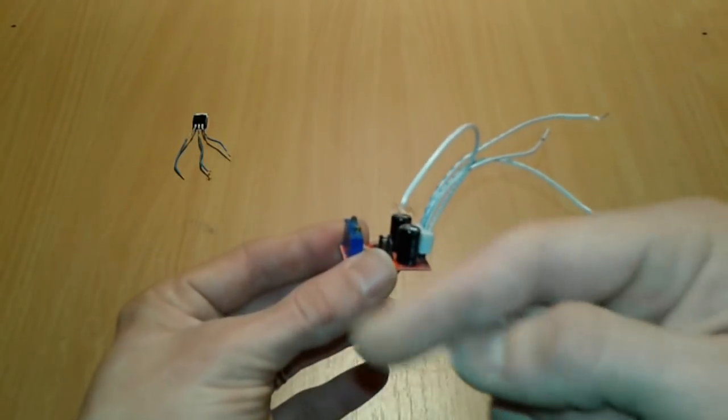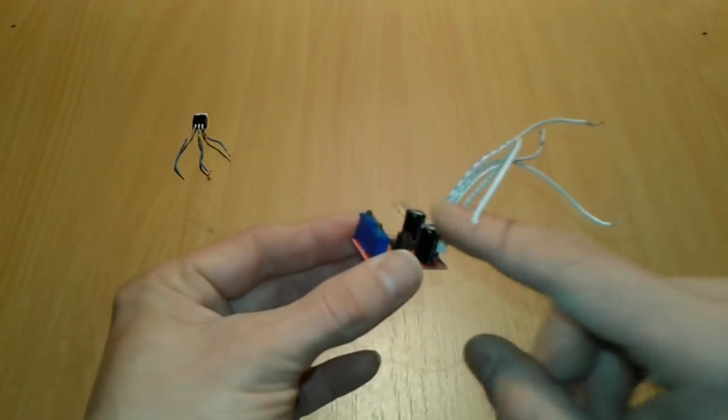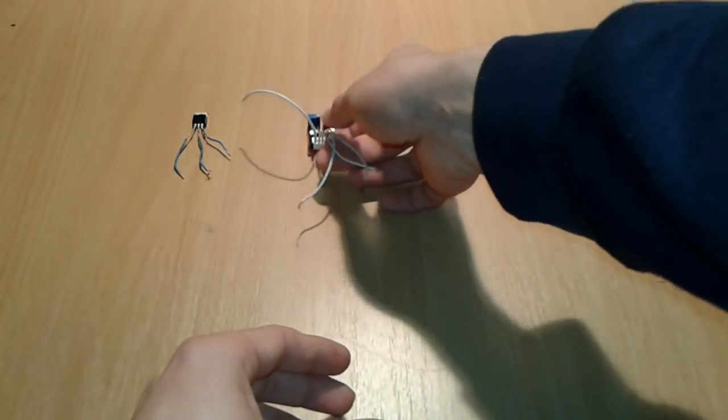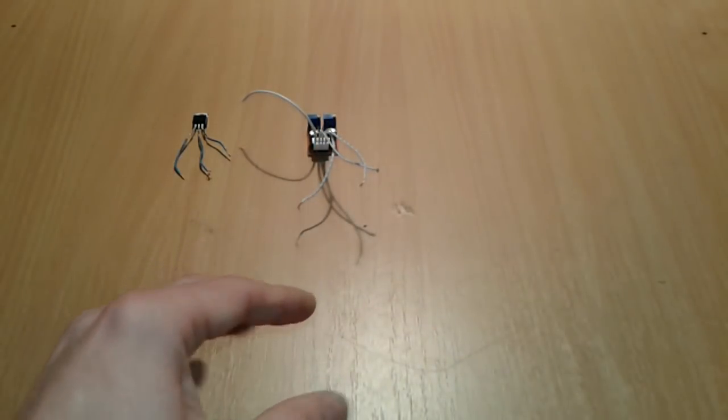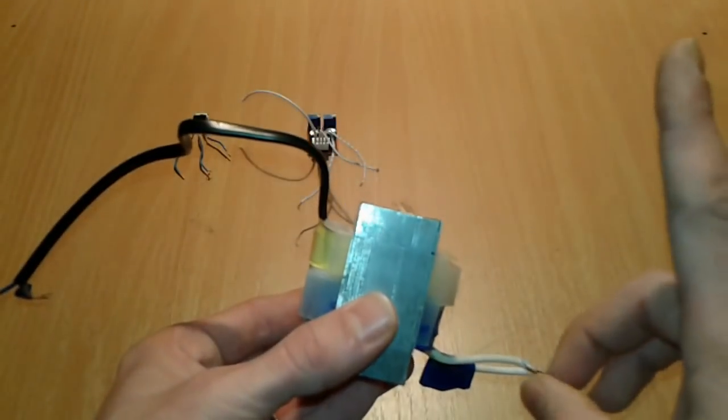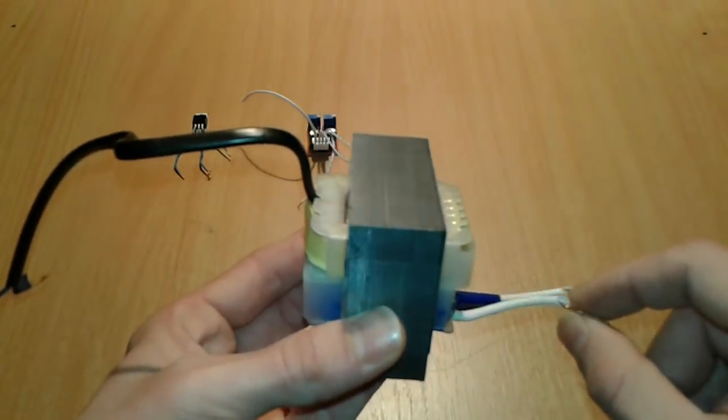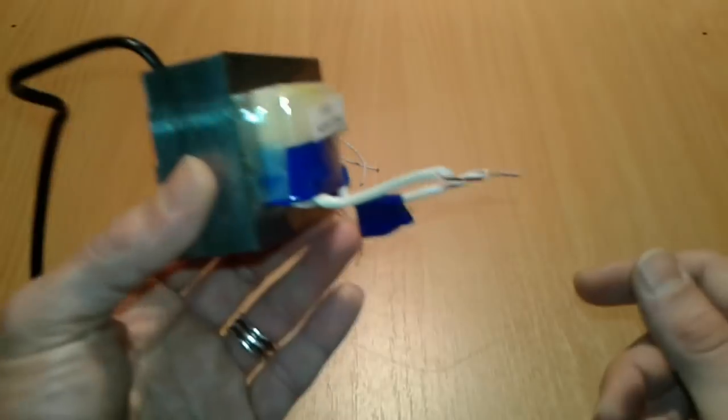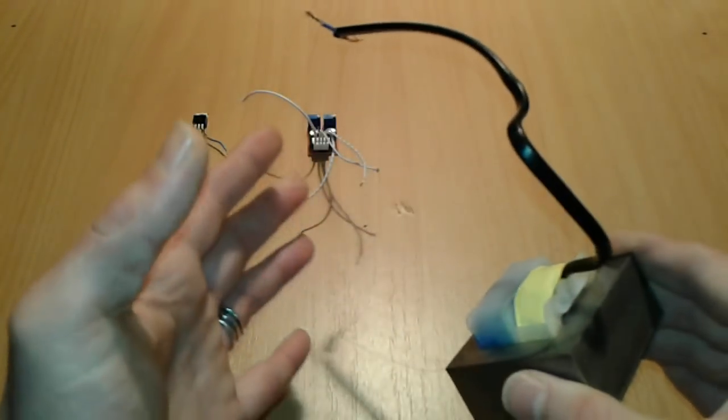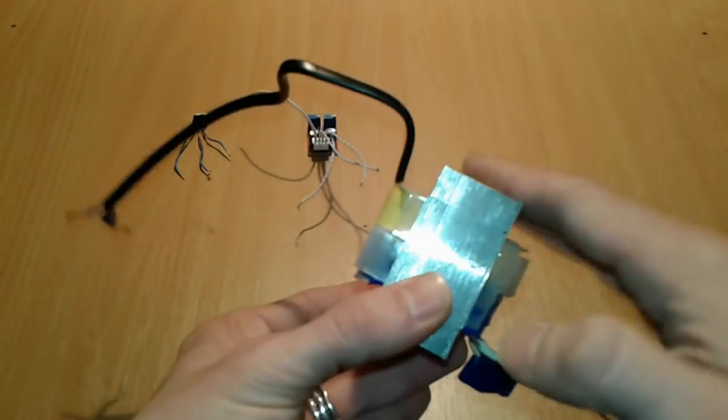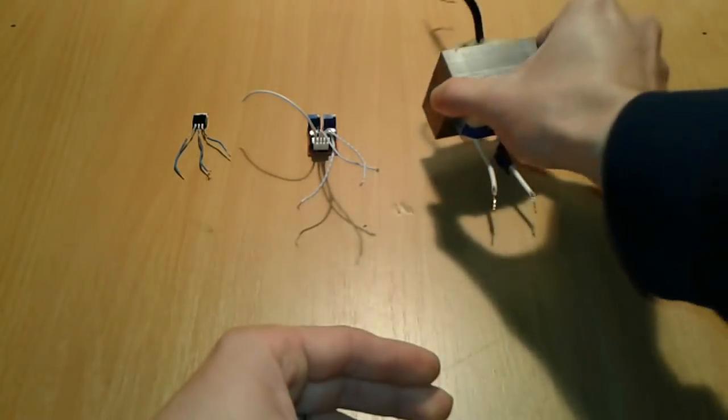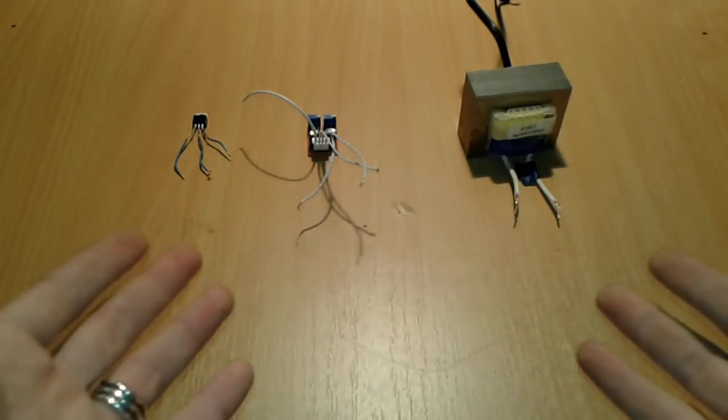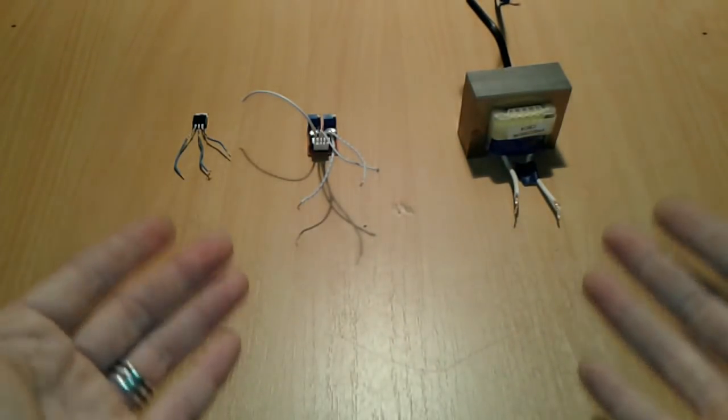So we have the MOSFET, we have the oscillator. One transformer that we have a video where we did - this one is from an old car charger. It was crap, but at least we got something good.